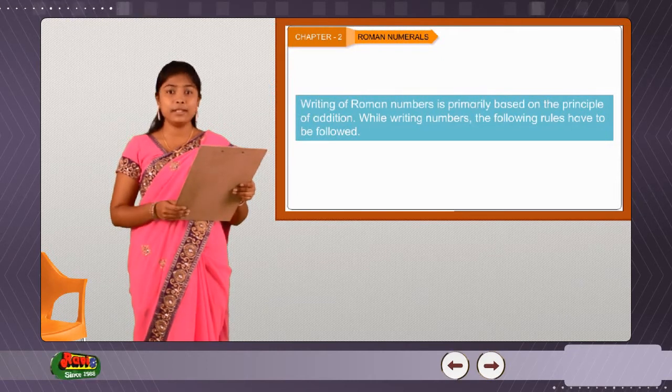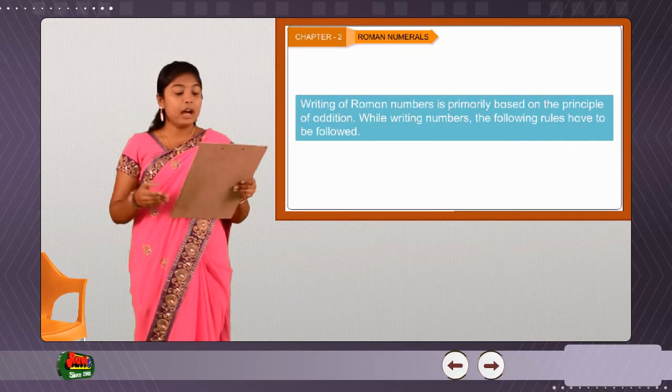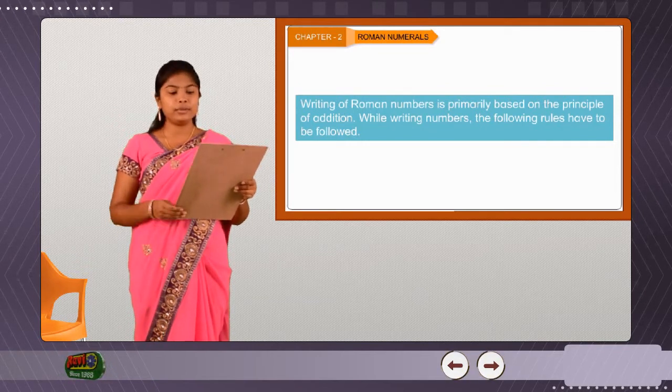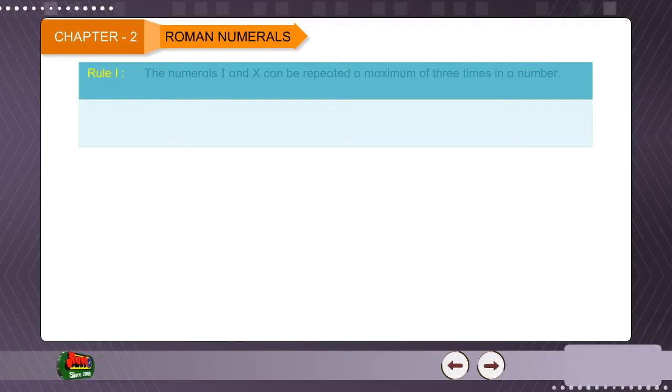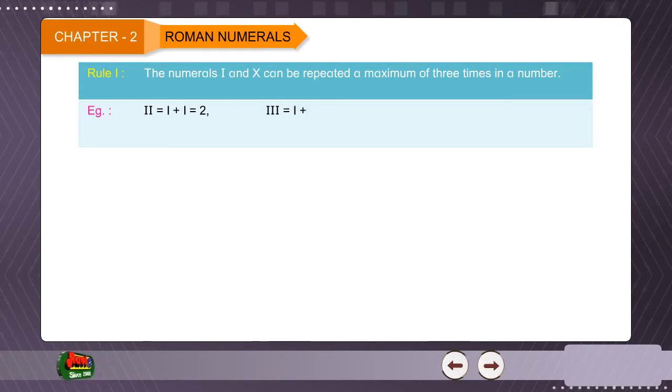Writing of Roman numbers is primarily based on the principle of addition. While writing numbers, the following rules have to be followed. Rule 1: The numerals I and X can be repeated a maximum of 3 times in a number. Example: II equals 1 plus 1 equals 2, III equals 1 plus 1 plus 1 equals 3.